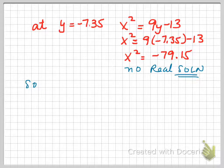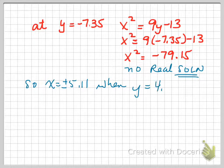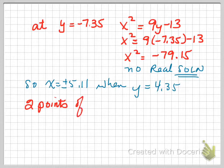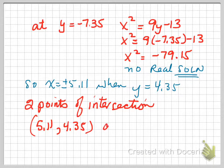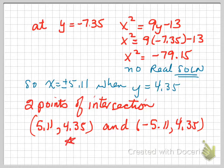So we're going to go back to our two values for x, where x is equal to plus or minus 5.11 when y was equal to 4.35. And so we have two points of intersection. The two points of intersection occur at the point 5.11 comma 4.35, and the other point of intersection is at negative 5.11 comma 4.35. And if you use graphing software to graph the parabola and the circle, you will see that these two points of intersection satisfy both of the equations.